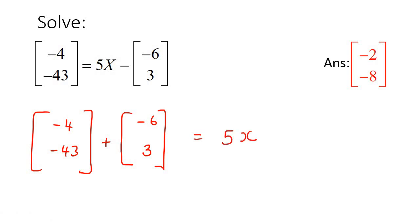So what we're going to do now is just add these together. Remember, you just add these elements together. And so that's going to end up becoming negative 4, negative 6, that's negative 10. And then negative 43 plus 3, which would be negative 40. And that's equal to 5x.